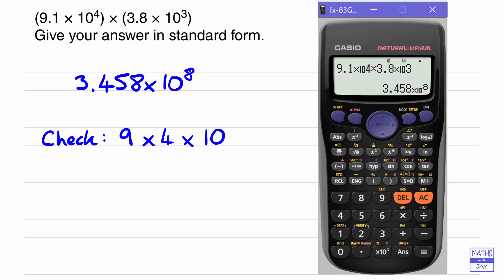And then you might have thought well we've got 10 to the power of 4, 10 to the power of 3 so we add those powers together. So that gives us 9 times 4 is 36 and then 10 to the power of 7.